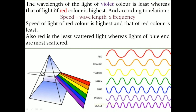The wavelength of violet color is the least whereas that of red color is the highest. Violet is the most deviated light, whereas red is the least deviated light.